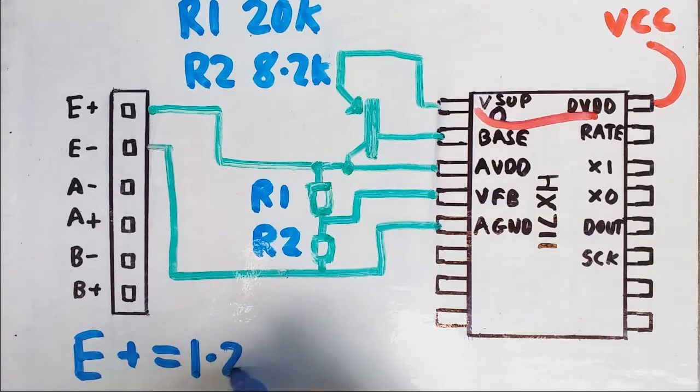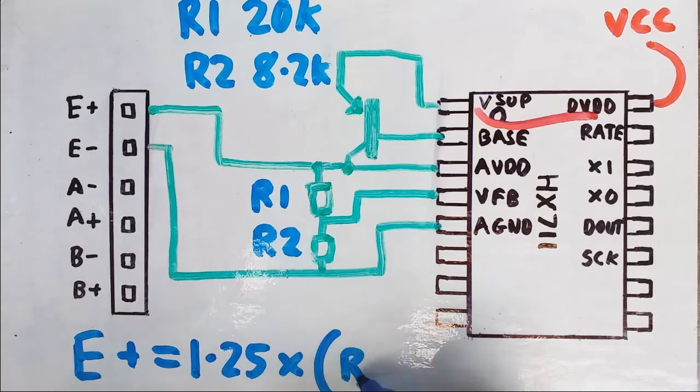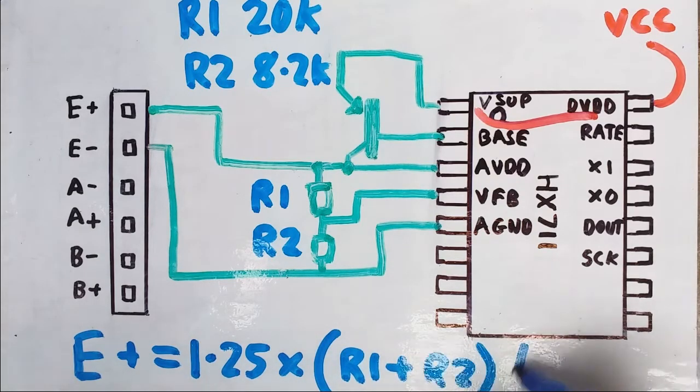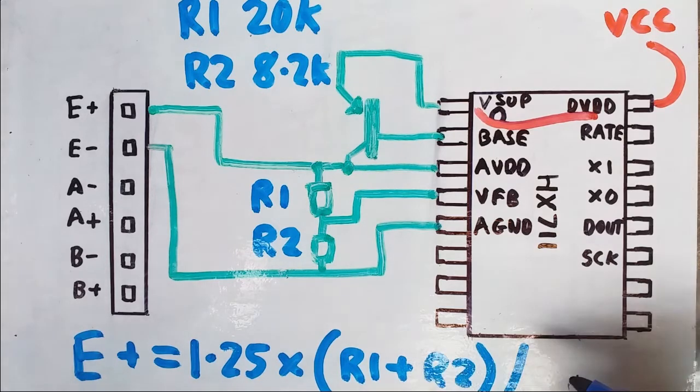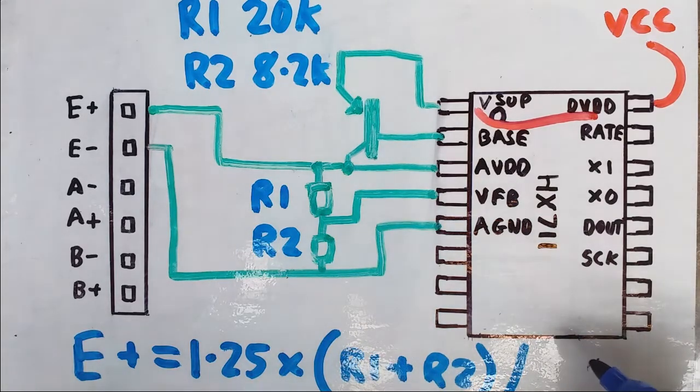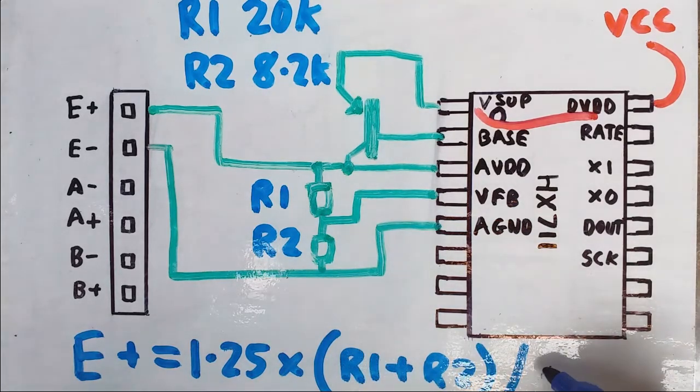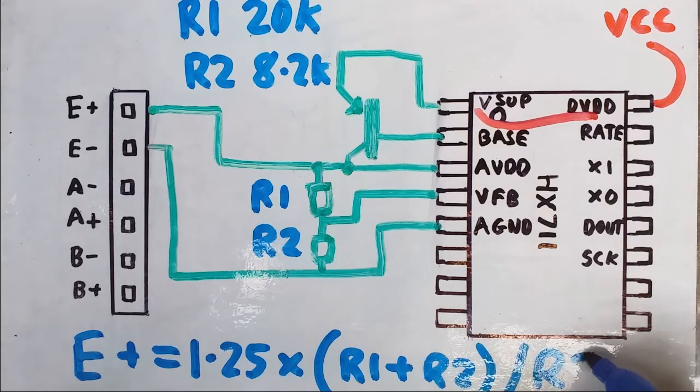That voltage there is equal to 1.25 volts times R1 plus R2 divided by, now this is the important difference from the datasheet, this is in fact supposed to be R2.